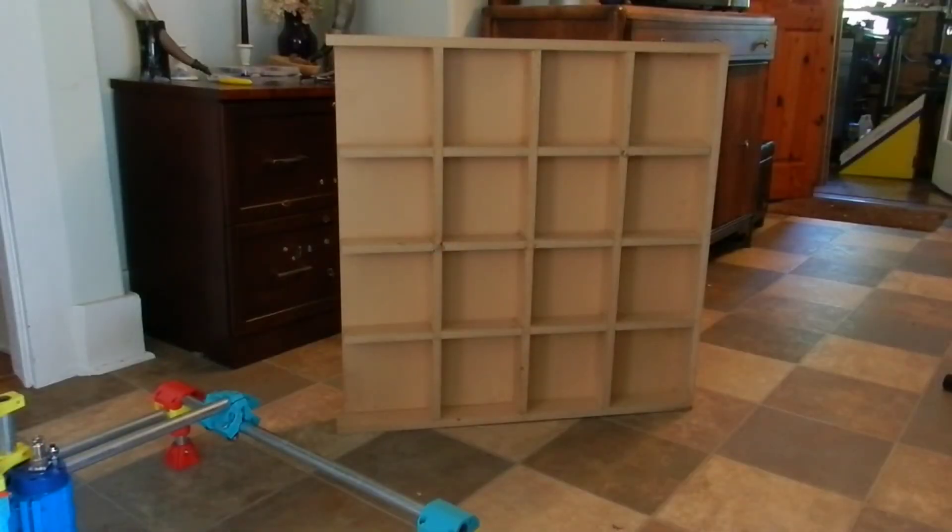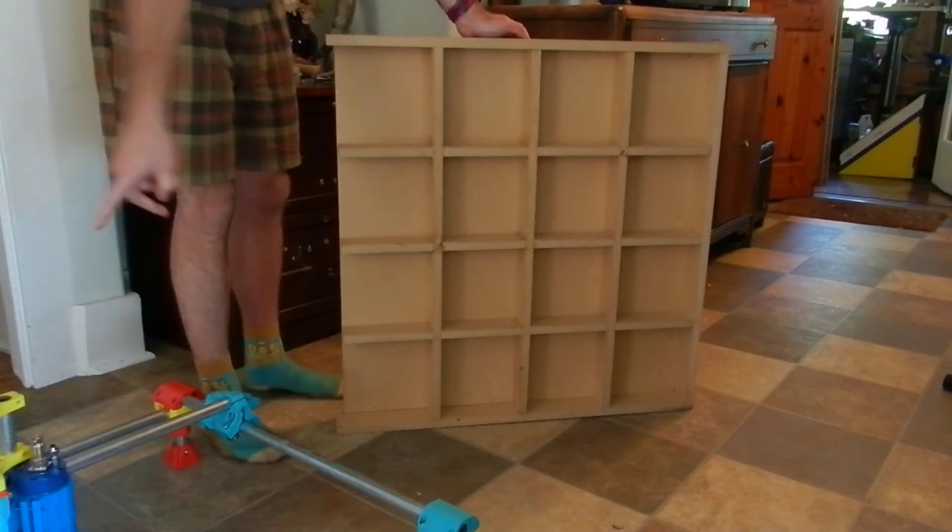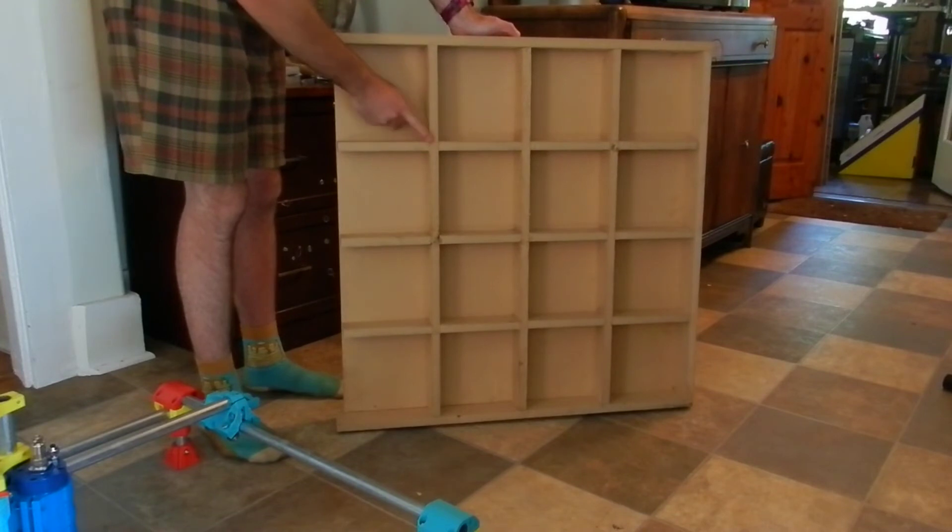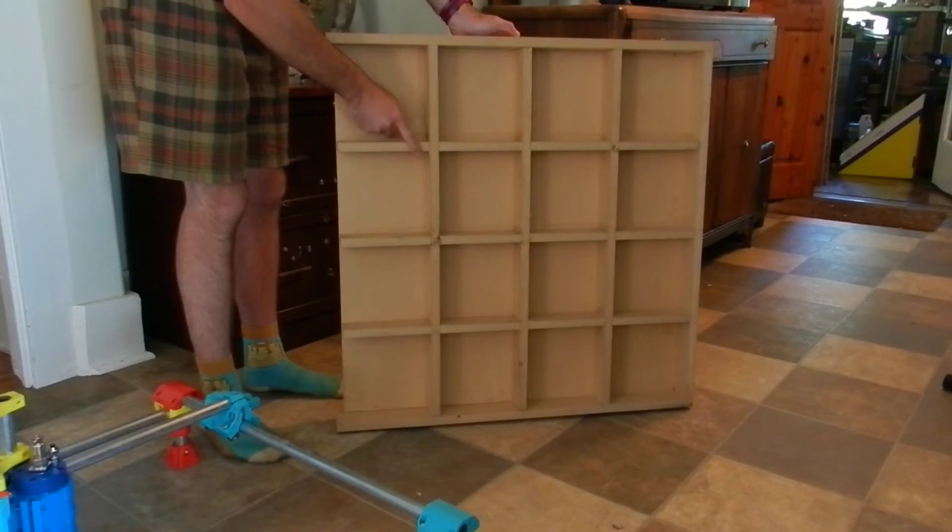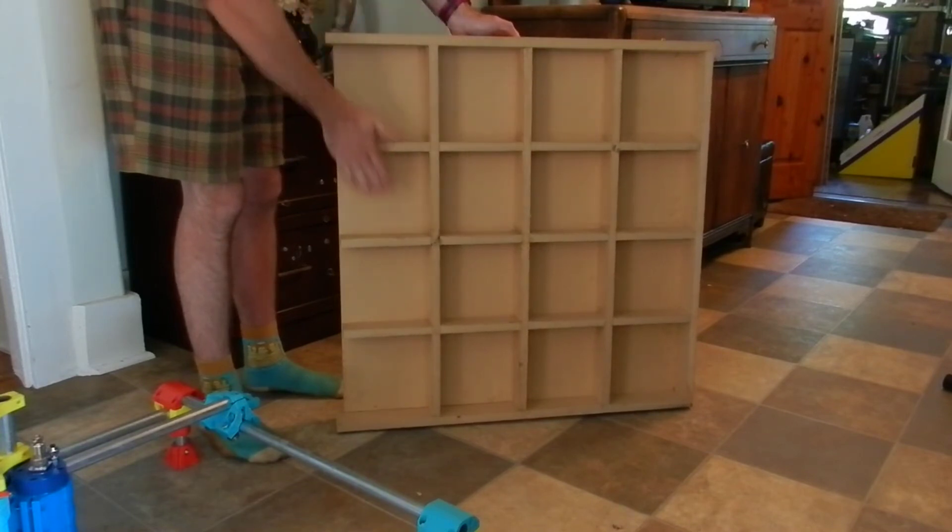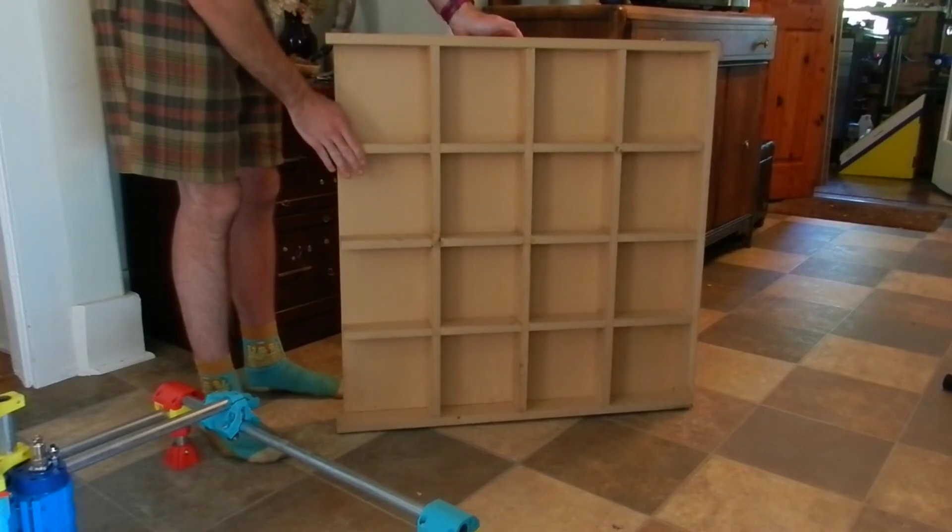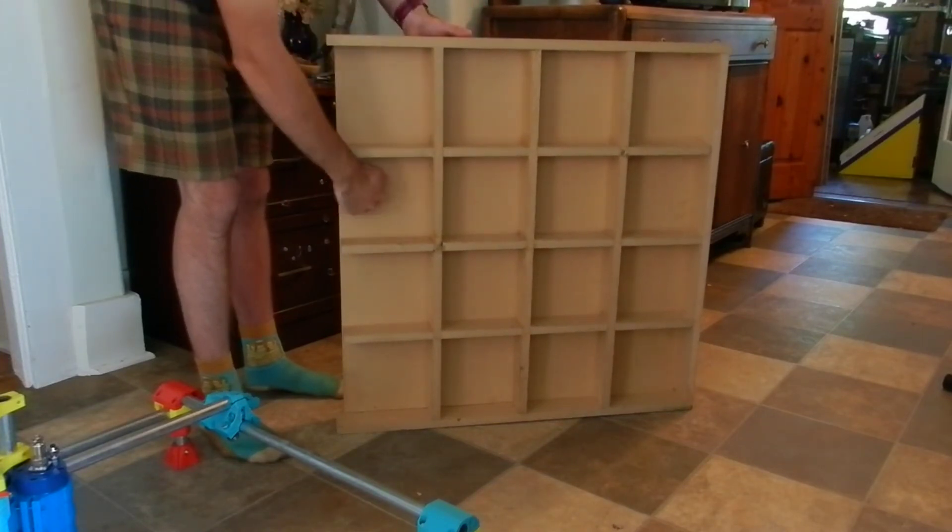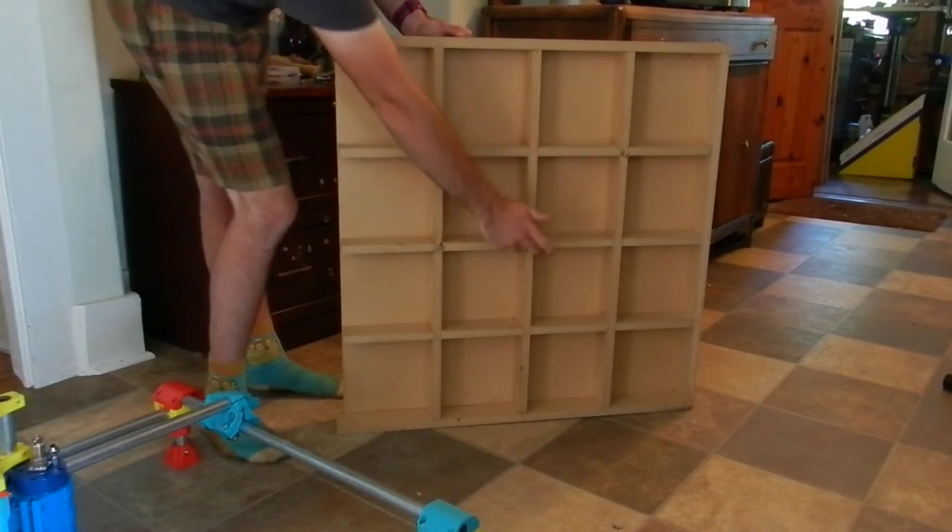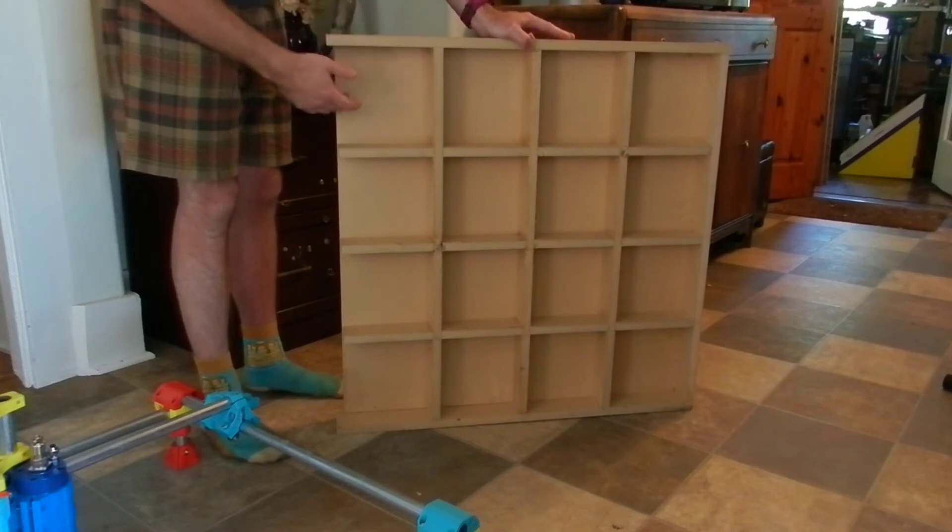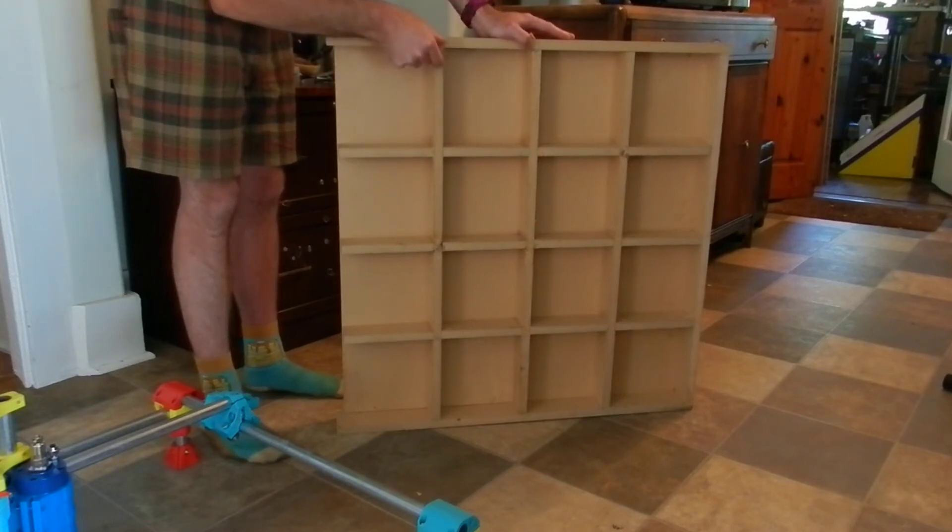This is the underside of the torsion table that's built for the MPCNC to mount on. It is 5/8 inch MDF and it is half-lap jointed together, so this whole torsion area was built first, nice and flat. And then this upper sheet was screwed down basically at every cross-point and then the side pieces were added.